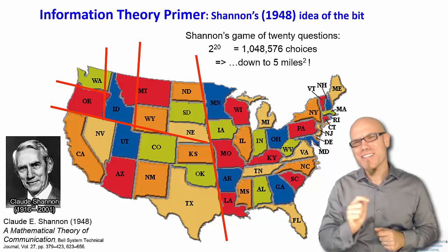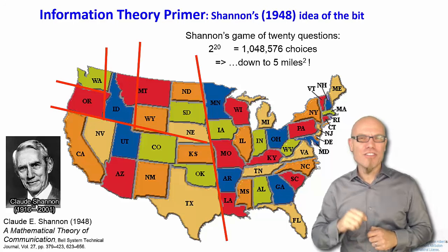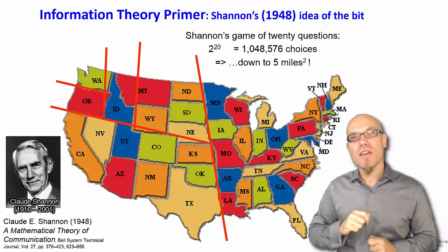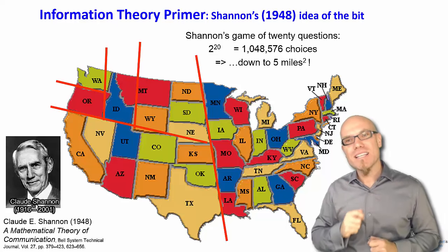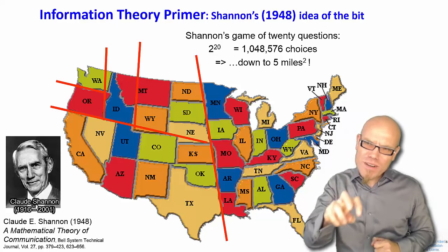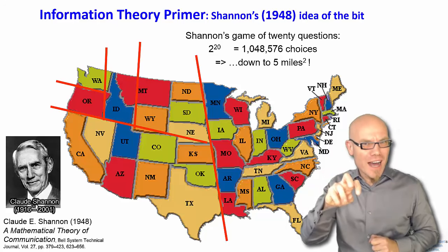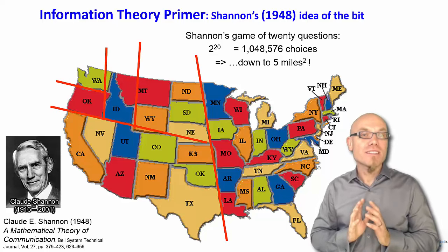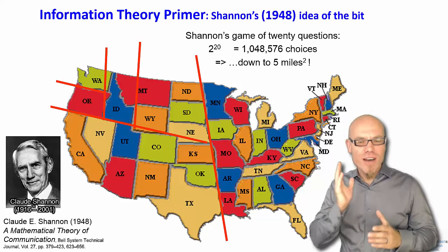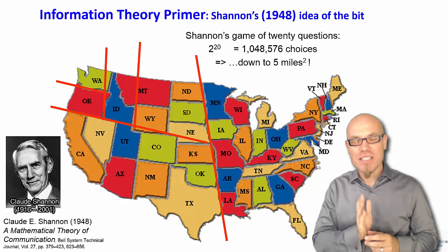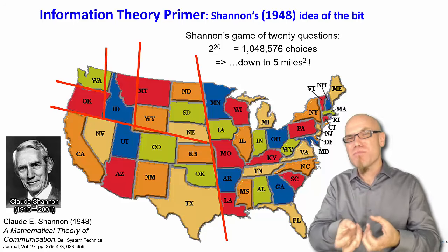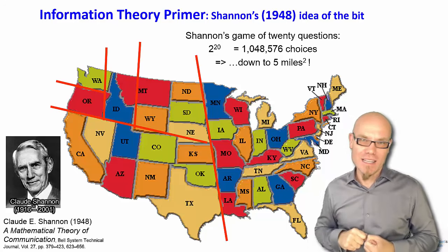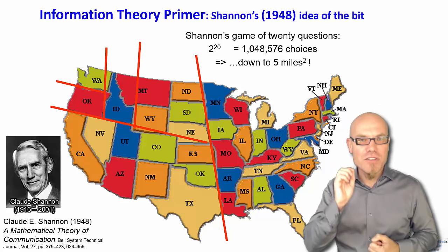You can show that there is an exponential logic with revealing the number of choices. After only 20 questions you are already to the equivalent of more than one million choices that allows you to zoom down to five square miles. So dividing the probability space by half is the most efficient way of extracting information and therefore communicating information. And that's the idea of the bit.